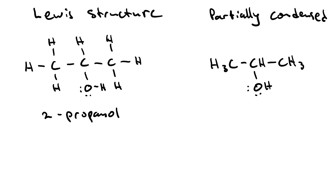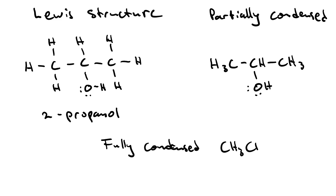Now you can make a fully condensed structure by getting rid of all the dashes. So that would be CH3, CH, and then the OH in parentheses since it's a side group, and then CH3. The fully condensed structure is easy to do with just a keyboard, but now you're kind of having to rely on what you already know about structure.